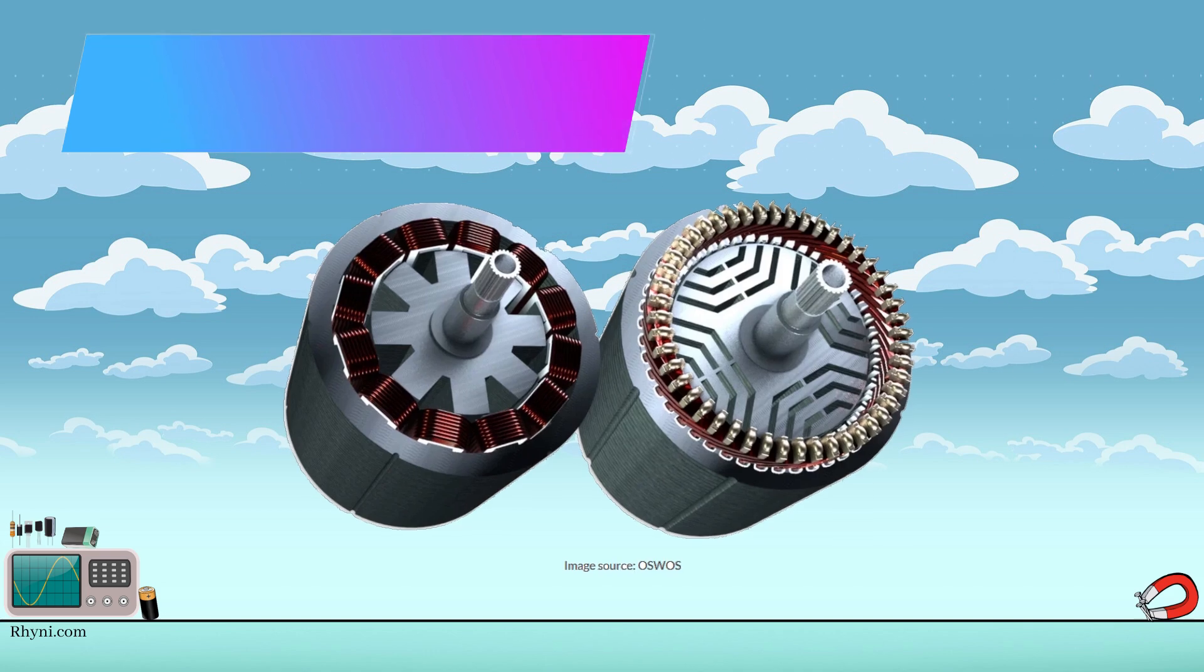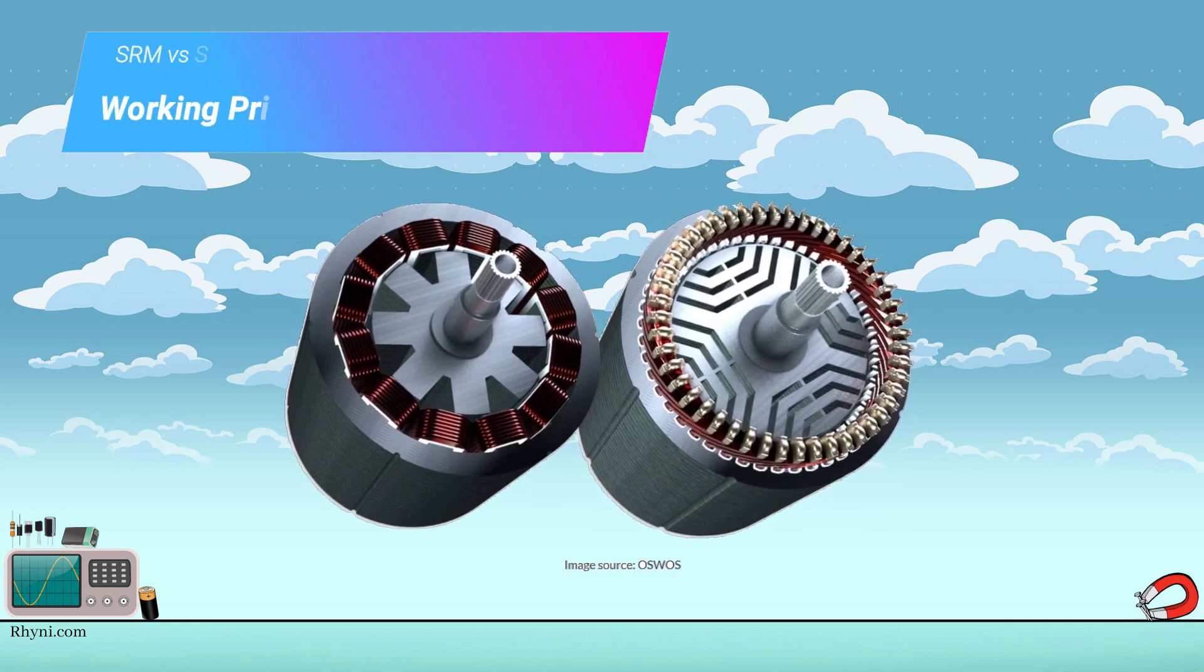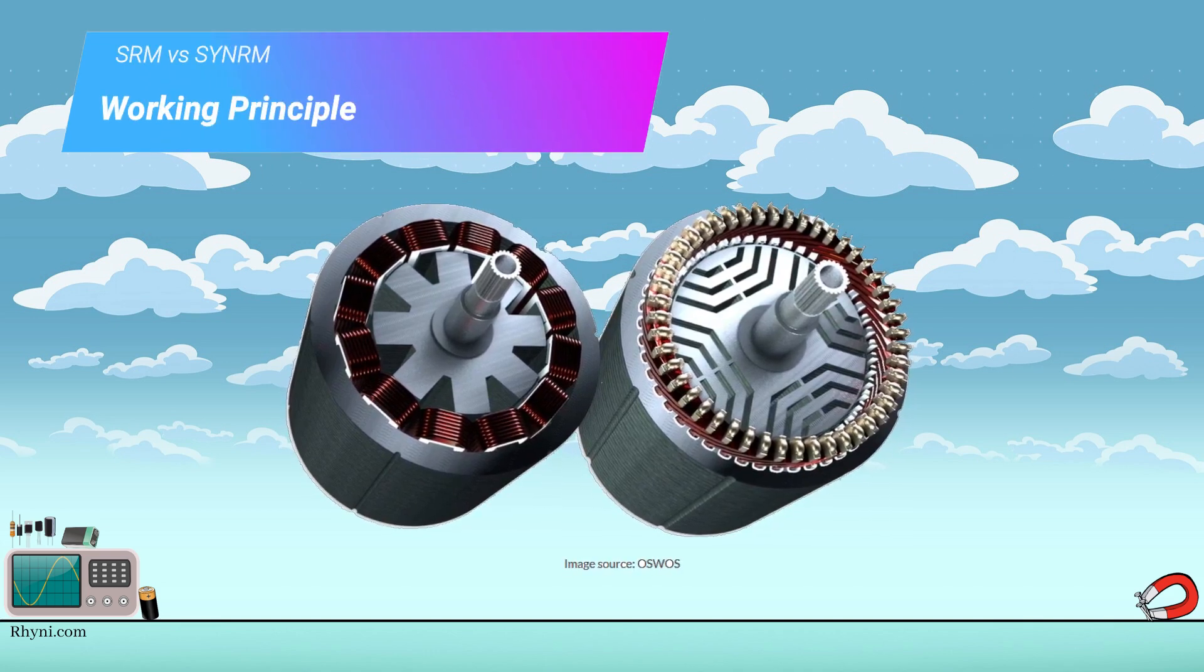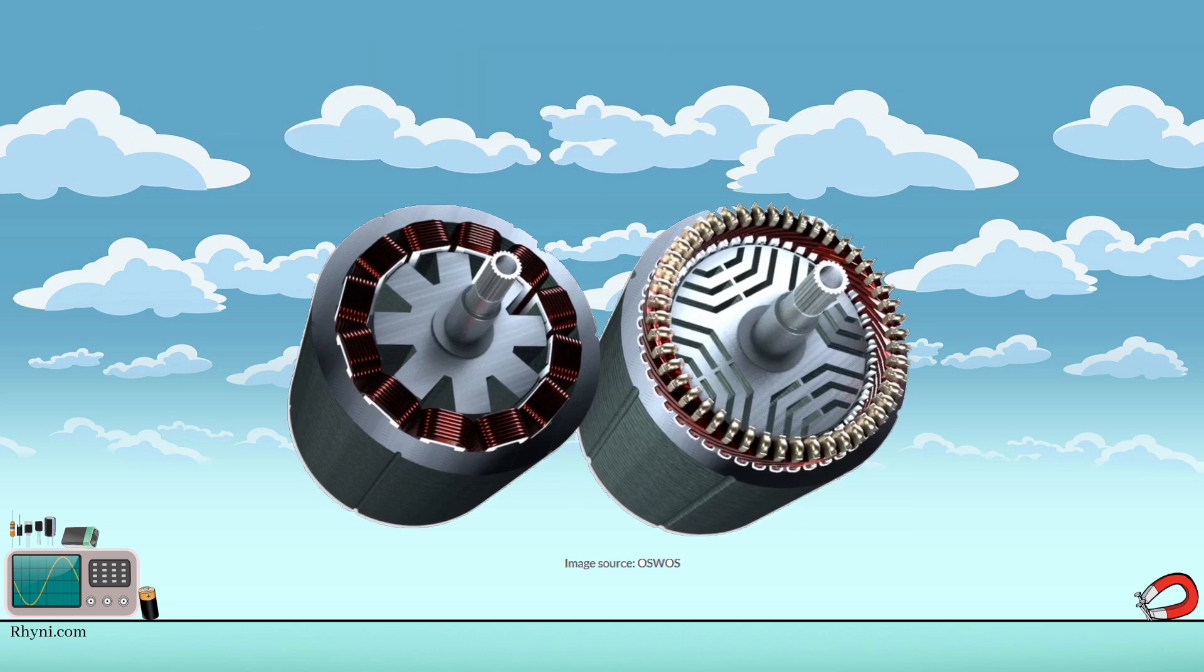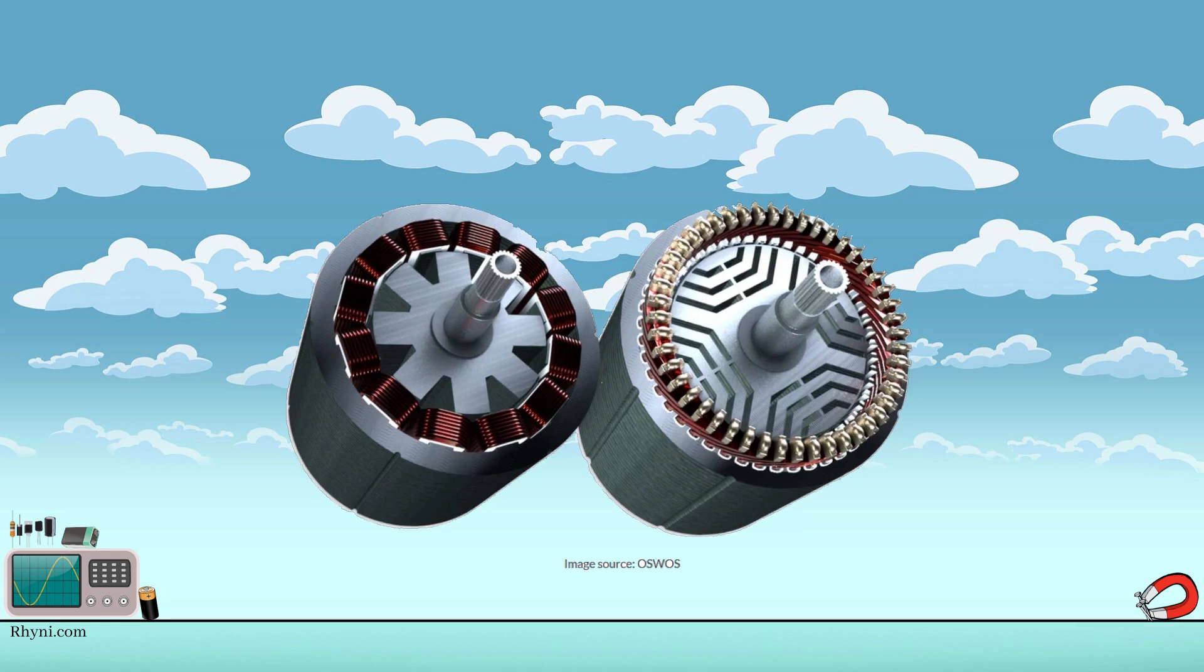Working principle. Stator of the SRM has concentrated windings and each phase produces the salient pull. Whereas, the stator of the SYN-RM has a distributed winding like induction motor which produces the rotating magnetic field. In the SRM, phase switching is done to change the location of the stator poles with rotor position to produce the rotation of the rotor.